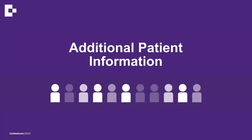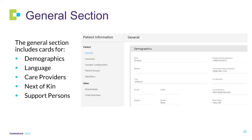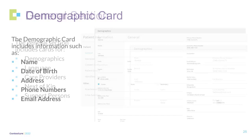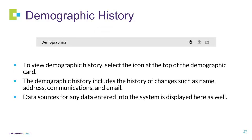In this section, we will review how to access additional patient information. From the patient summary page, select More Patient Information to view demographics, insurance provider information, and more about the selected patient. The general section includes data cards for demographics, language, care providers, next of kin, and support person. The demographics card includes information such as name, date of birth, address, phone numbers, and email addresses. To view demographics history, select the icon at the top of the demographics card.